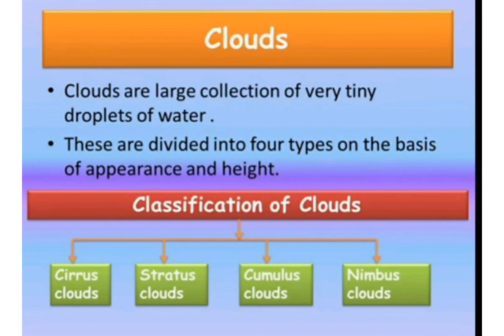Let us recap the four types of clouds: cirrus clouds, stratus clouds, cumulus clouds and nimbus clouds. Cirrus clouds appear like a silver grey fish at very high altitude in the sky — these may not give rain. Stratus clouds are grey in colour and are spread out — they may give a small shower. Cumulus cloud looks like puffy white cotton and gives convectional rainfall. Nimbus cloud appears dark or grey in colour, gives heavy rainfall, and is also called vertical or rain cloud.